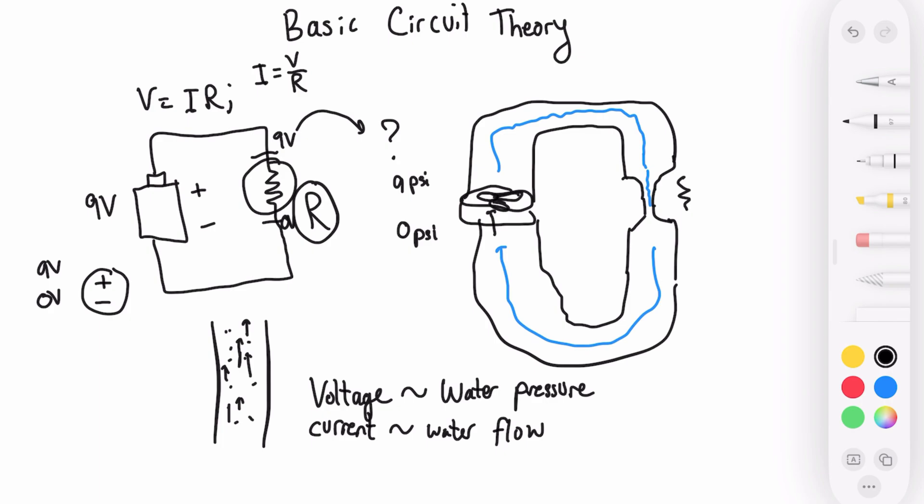So if we suppose in our case, R equaled, say two, we would have that our current is going to be nine volts over two Ohms. And this equals 4.5 amps. So basically, depending on how resistive this thing is to flow is going to determine the amount of amp or basically the flow or the rate at which things are moving.